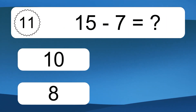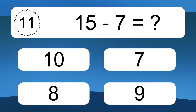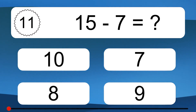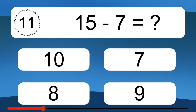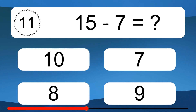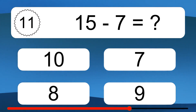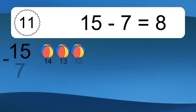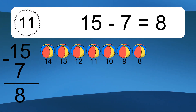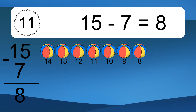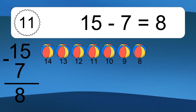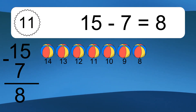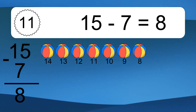15 minus 7 equals what? 15 minus 7 equals 8. Let's count it: 14, 13, 12, 11, 10, 9, 8.